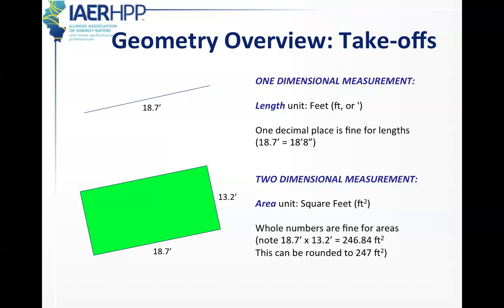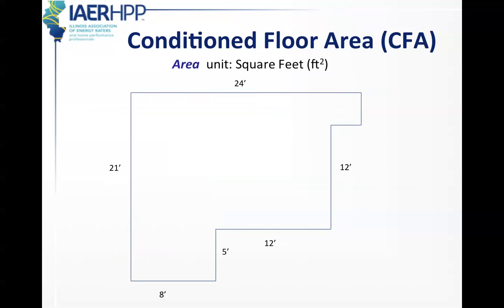So if you take your calculator and just multiply 18.7 times 13.2, it will give you a number that is 246.84. You can just go ahead and round that up to 247. You round it up because the decimal places are over 0.5. The next thing is you're going to use the two dimensional measurements, the square feet, to measure areas. This is for conditioned floor areas of houses.